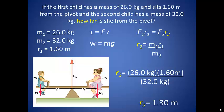As you might expect, the distance the heavier child needs to sit from the pivot point is a bit less than the distance of the smaller child.